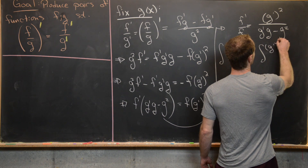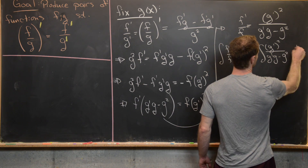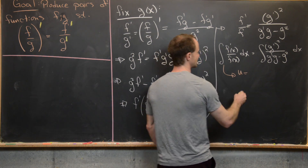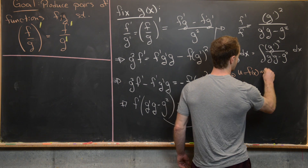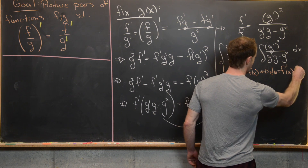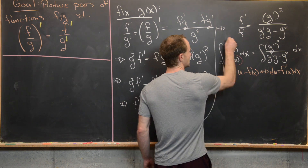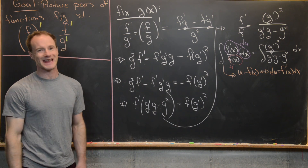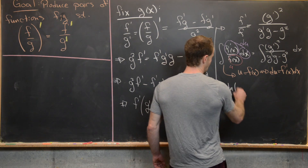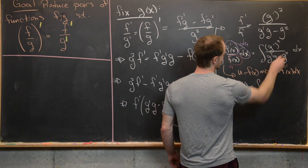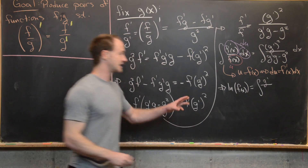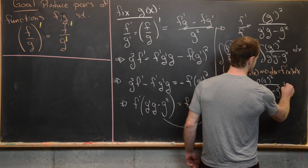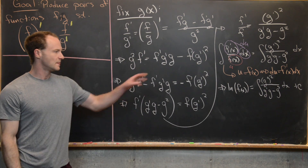By a simple u-substitution — letting u equal f of x, so du equals f prime of x dx — the left-hand side becomes the natural log of f of x. So we have ln(f of x) equals the antiderivative of g prime squared over (g prime times g minus g squared) dx, plus a constant.